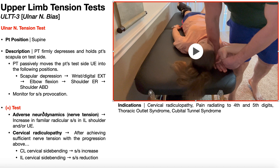The rules for a positive test haven't changed. If we're simply looking at nerve tension — adverse neurodynamics — all we're looking for is an increase in familiar nerve symptoms. Do they have nerve tension in the ipsilateral shoulder and/or upper extremity? Nerve tension in the arm is all it takes to be a positive test for adverse neurodynamics.